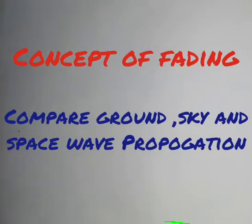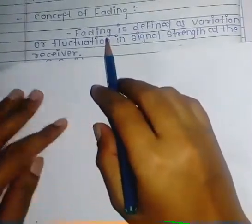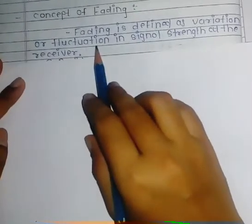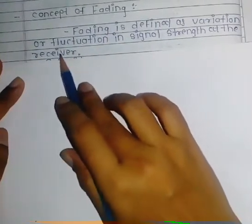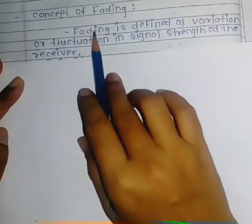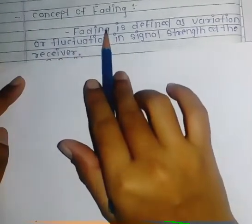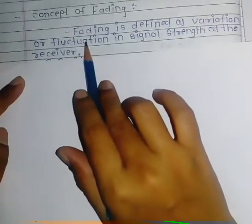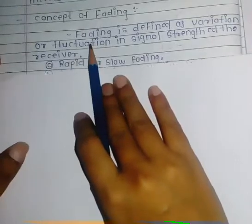Today we see the concept of fading and the difference between ground wave, sky wave, and space wave propagation. Fading is defined as a variation or fluctuation in the signal strength at the receiver. The signal which is transmitted from the transmitter to the receiver is not the same — this fluctuation or variation is because of fading.